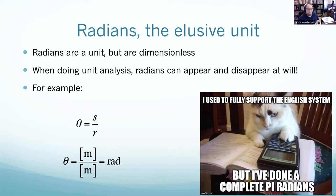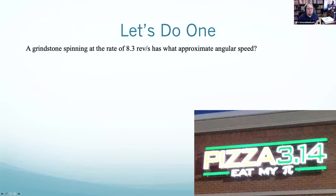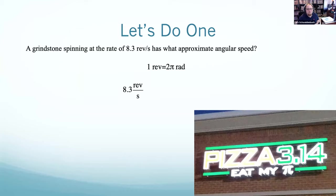You will sometimes have to do unit conversions. Normally when people give you angular velocities, they work in revolutions. If I tell you something moves at 8.3 revolutions per second, make sure you always convert to radians. You need to know that one revolution is 2π radians, and 2π radians is 360 degrees. If I want 8.3 revolutions per second in radians per second, I just multiply by a ratio to cancel out revolutions and get radians. That's the general idea.